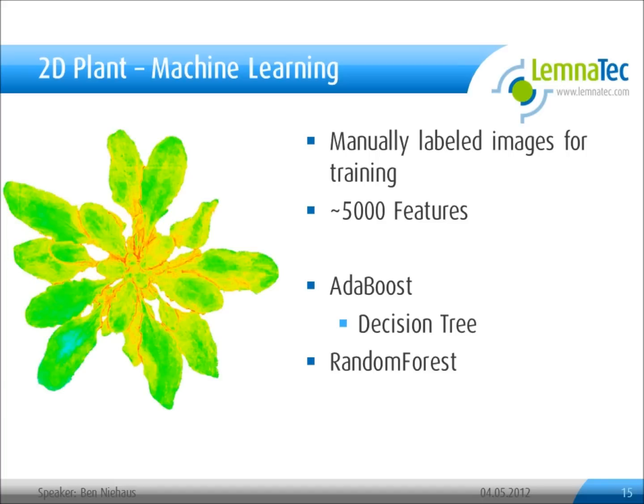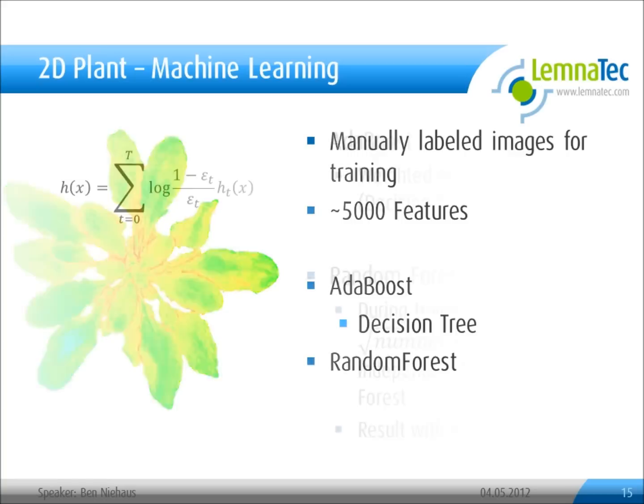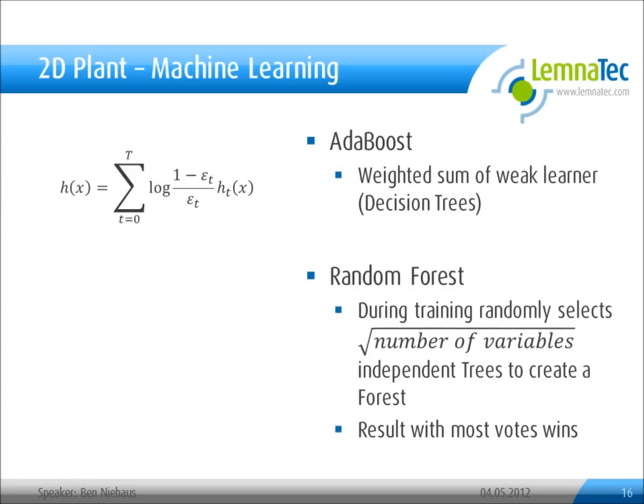We also tried Adaboost, which turned out to work great on corn plants but not so well on Arabidopsis plants. Adaboost is a combination of so-called weak learners; in our case, the weak learner is the decision tree. Random forest is also a combination of weak learners, but here the majority of the weak learners decide whether the pixel belongs to the foreground or the background.